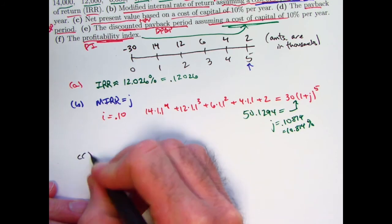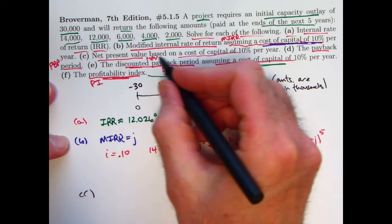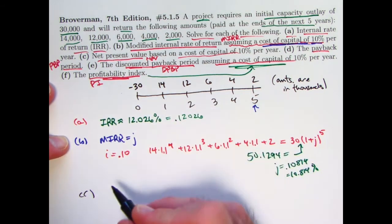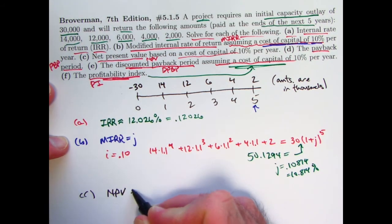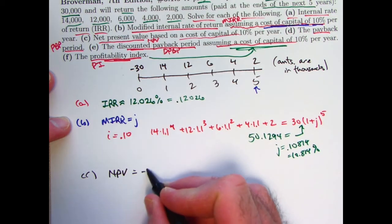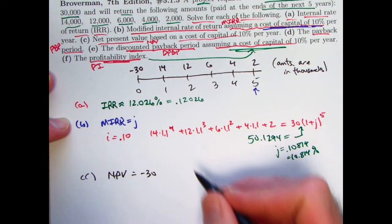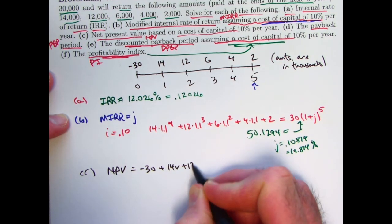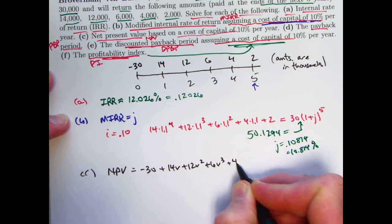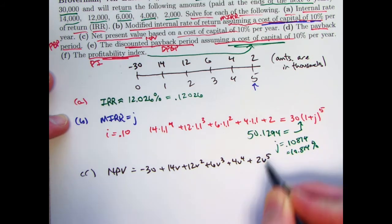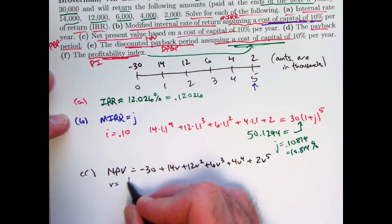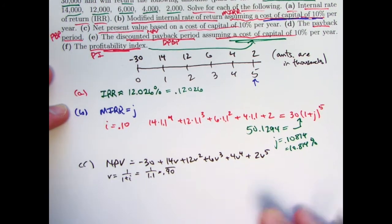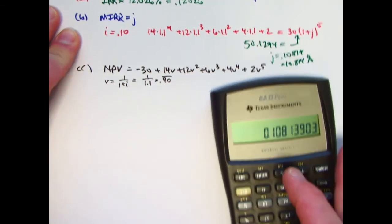Next, on to part C. Net present value based on a cost of capital 10% per year. Based on what we've talked about, that's going to be the present value of the entire cash flow, including the negative 30 at the beginning at time zero. So we're going to discount these back to time zero. The negative 30 is already at time zero, so I'm going to have negative 30 plus 14V plus 12V squared plus 6V cubed plus 4V to the fourth plus 2V to the fifth, where V is 1 over 1 plus I, where I is assumed to be the cost of capital, so this is 1 over 1.1, which turns out to be 0.90 repeating. And now it's just a matter of doing this calculation.